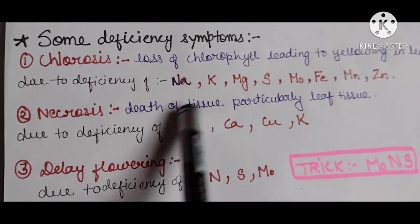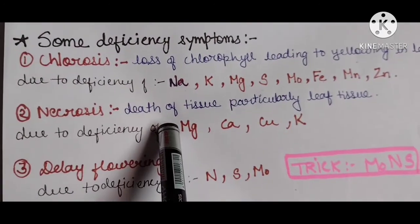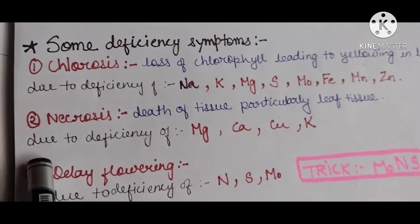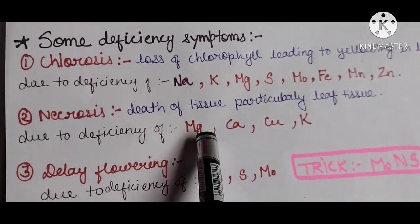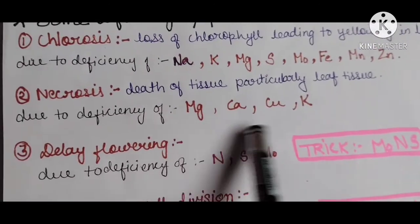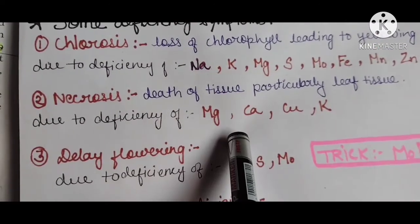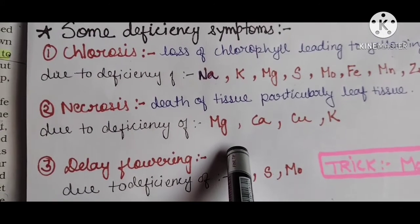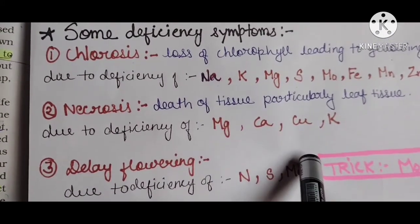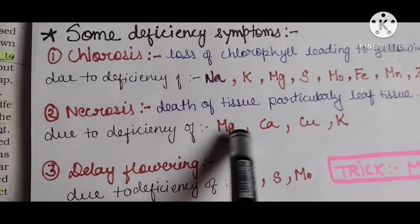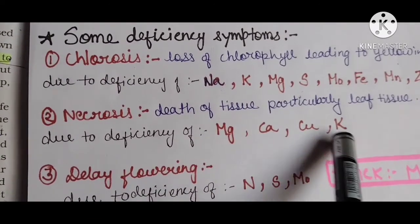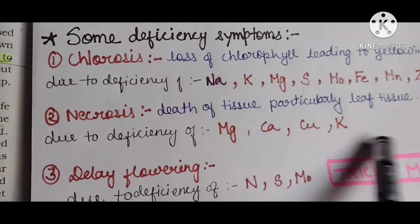Necrosis is the death of tissue — particularly leaf tissue. The elements whose deficiency causes necrosis are magnesium, calcium, copper, and potassium. A mnemonic to remember this is 'Magi Ka Kuk.'